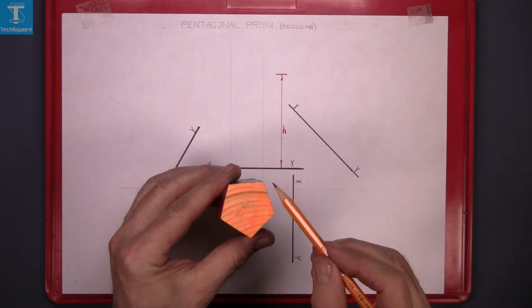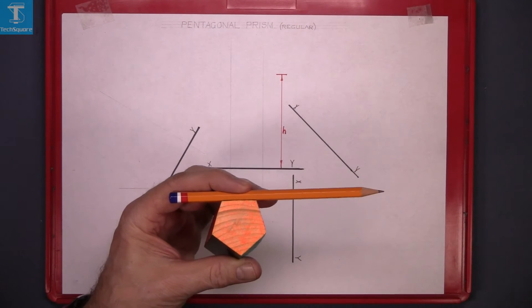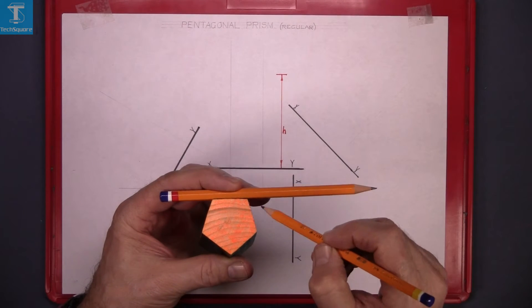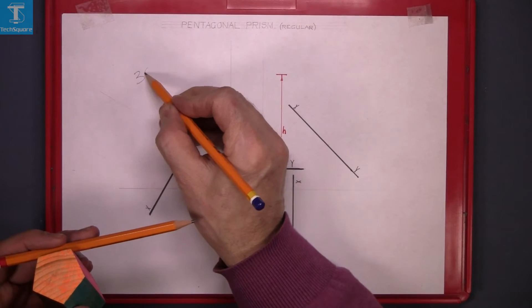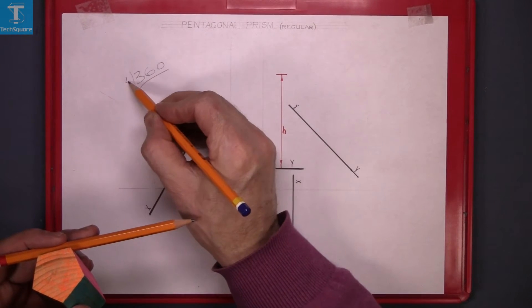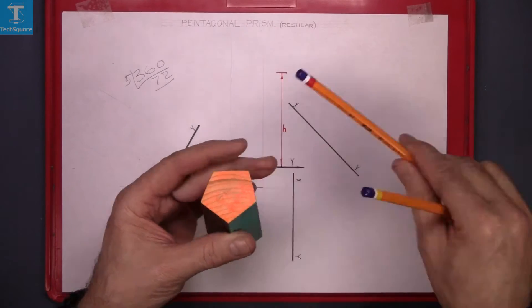Five sides and the angle here, the angle between these two lines is 72 degrees. 360 degrees divided by five gives 72. So the angle here is 72 degrees.